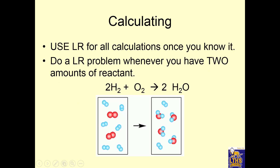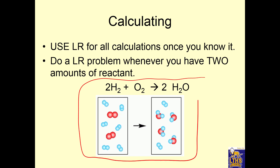I want you to do that same kind of thing with this diagram and we'll talk about it in class. The important thing is that for calculating, once you figure out the limiting reactant, you have to use it for all the calculations. We have to do a limiting reactant problem whenever there are two amounts of reactants given in the problem.